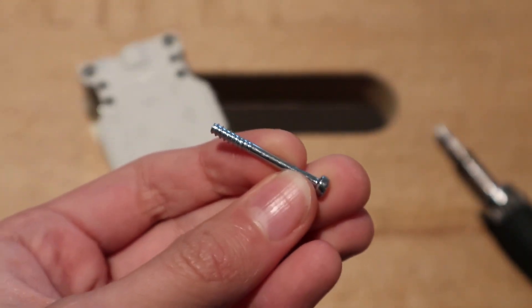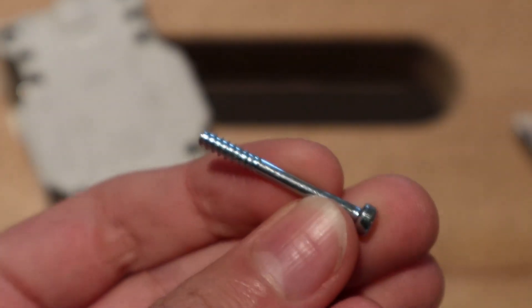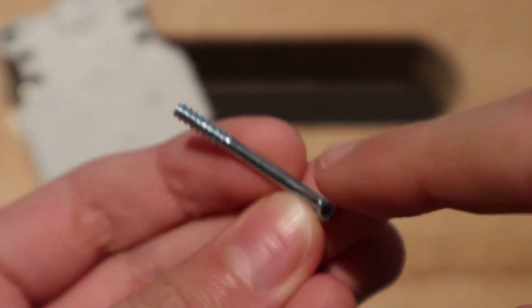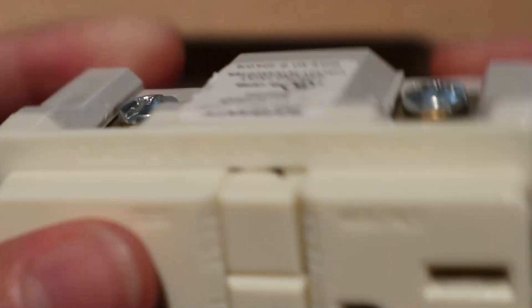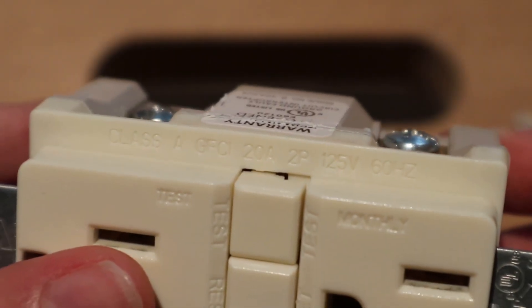So this screw is pretty interesting. It's got one section with no threads and a section with some threads, and also there is some text on the front of the outlet.